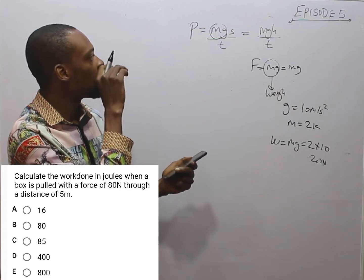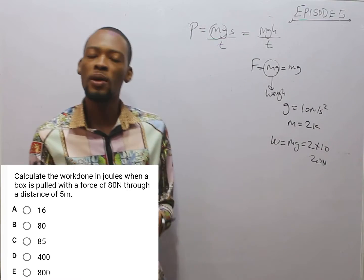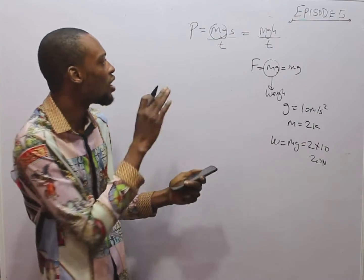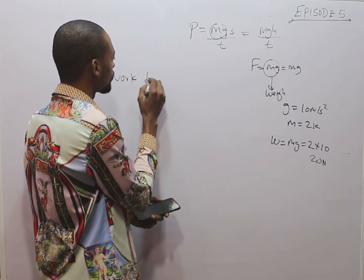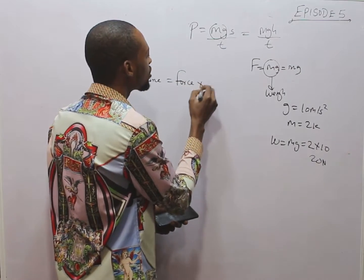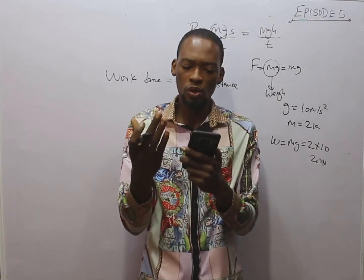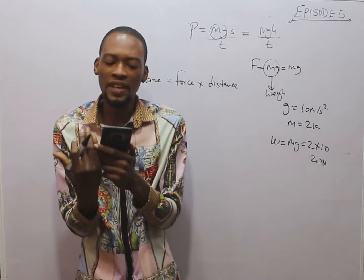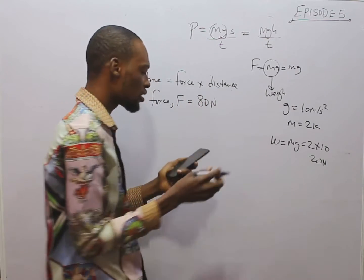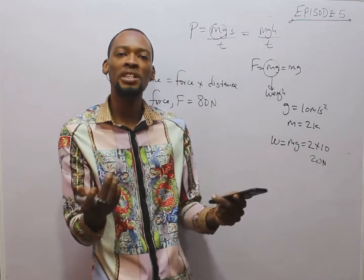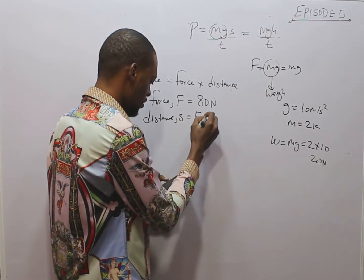Now, power equals work over time, and from there we derived that work done equals force times distance or displacement. Calculate the work done in Joules when a bus is pulled with a force of 80 Newtons, so force F equals 80 Newtons, to a distance of 5 meters, so distance S equals 5 meters.